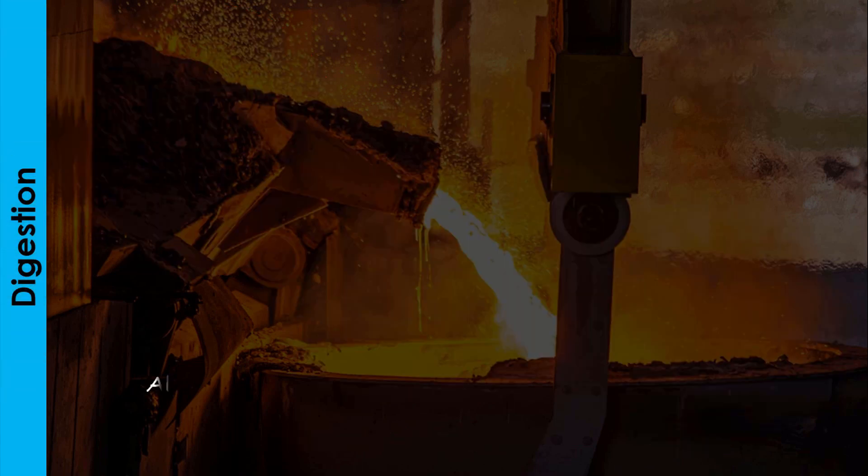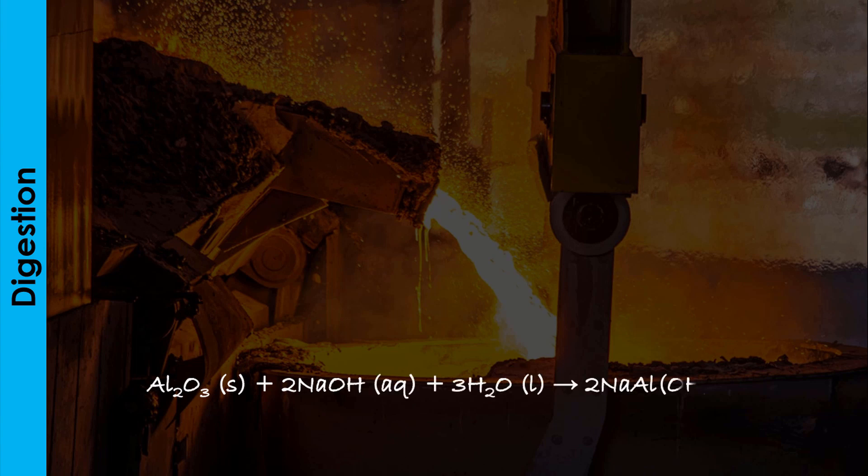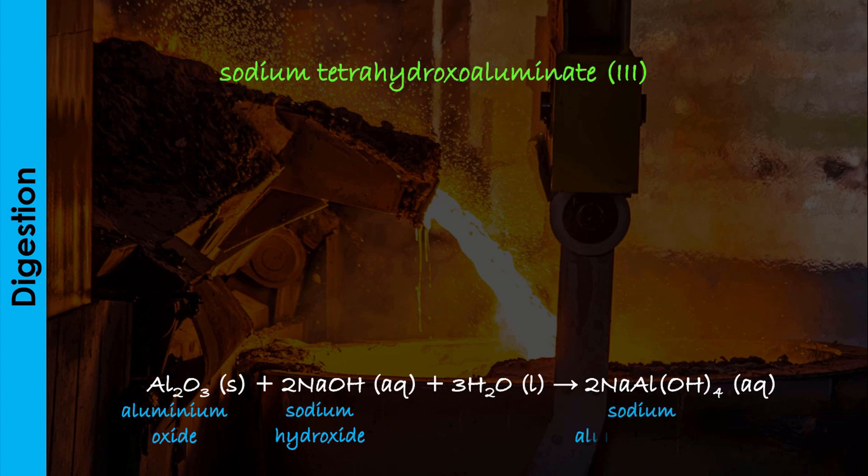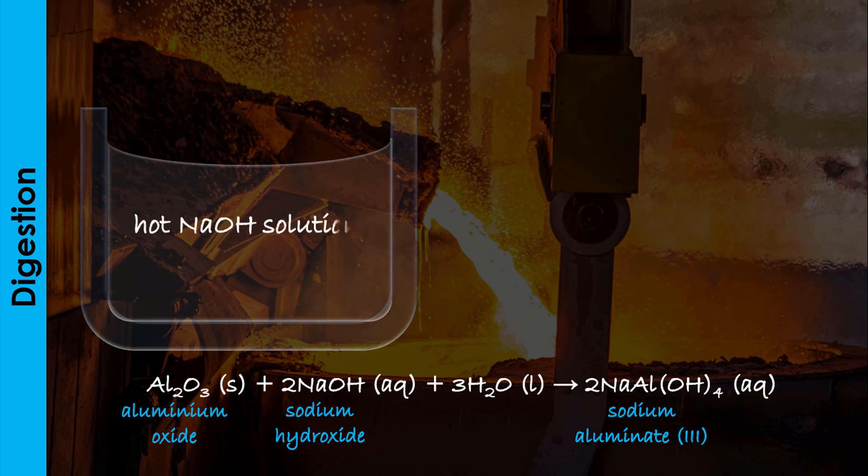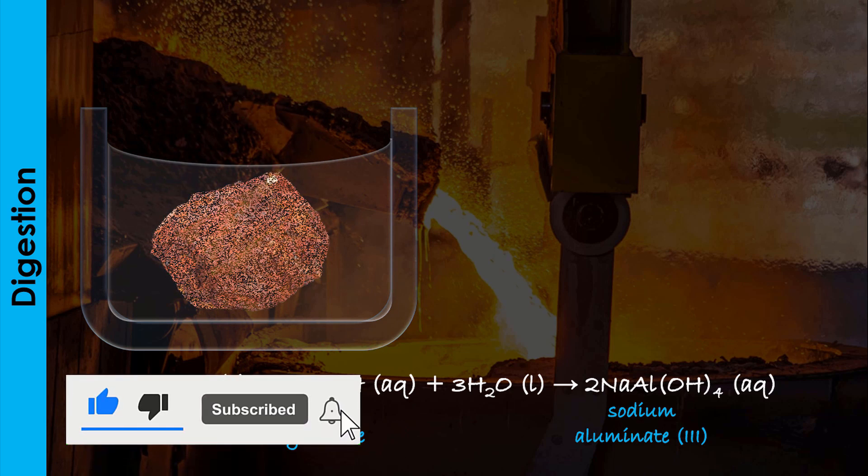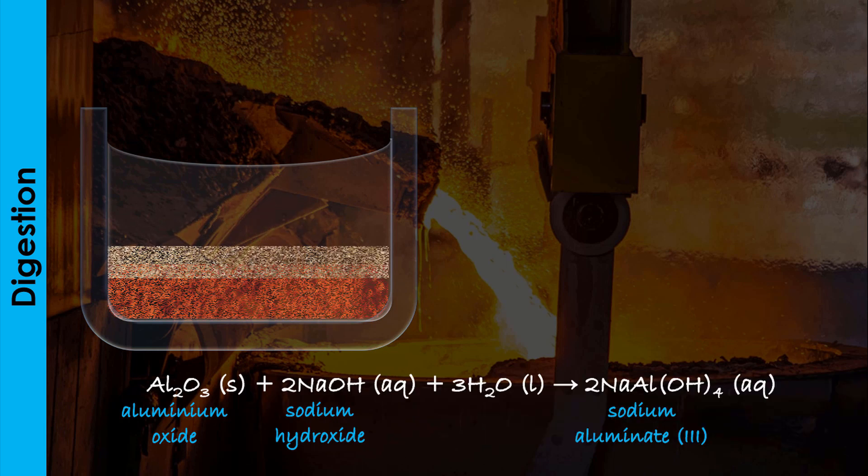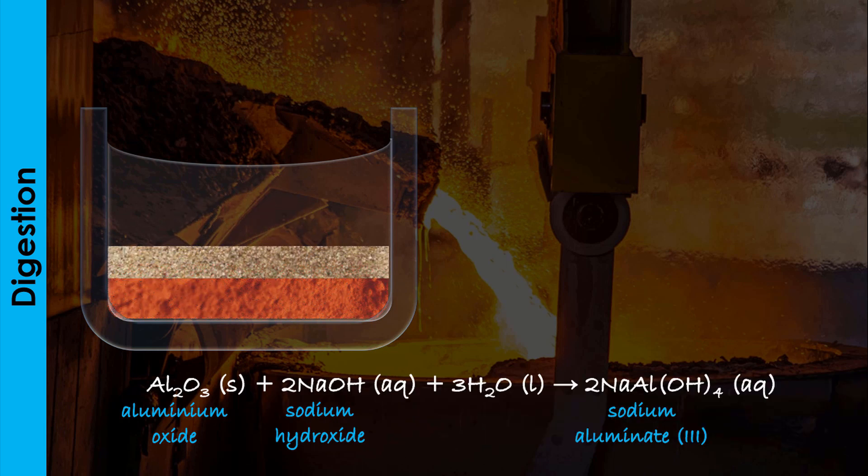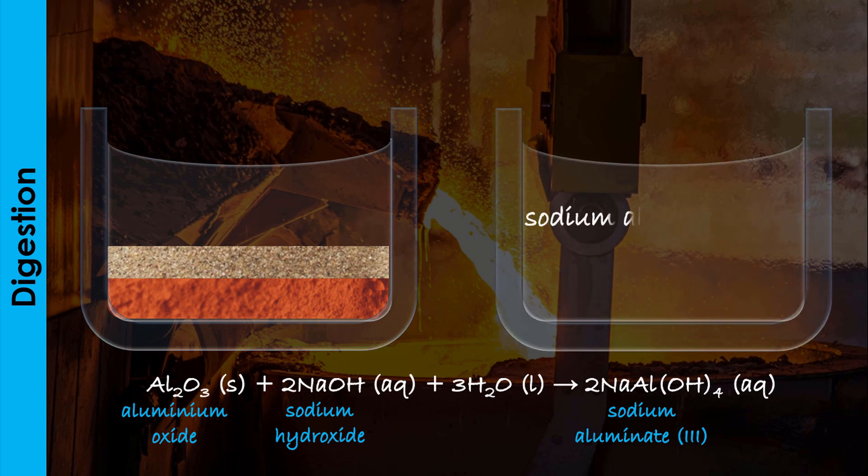In the first stage of the process, the bauxite is digested or dissolved in hot concentrated sodium hydroxide or caustic soda solution to yield sodium tetrahydroxyl aluminate (III) or sodium aluminate (III). The aluminum oxide, being amphoteric, dissolves in the alkali while the iron (III) oxide and silicon (IV) oxide do not dissolve.